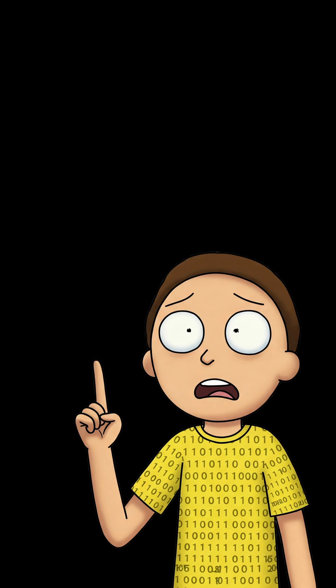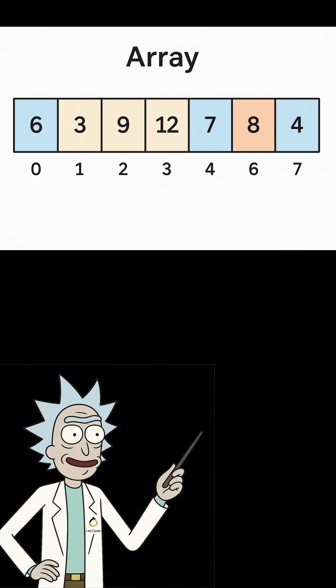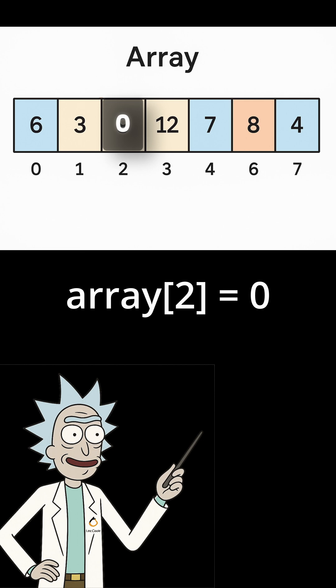What about removing something? If you want to delete something, you just overwrite it with whatever makes sense — a zero, null, empty string, whatever. It's like my memory eraser, Morty. You're not actually removing the space, just changing what's in it. Array[3] = 0, done.